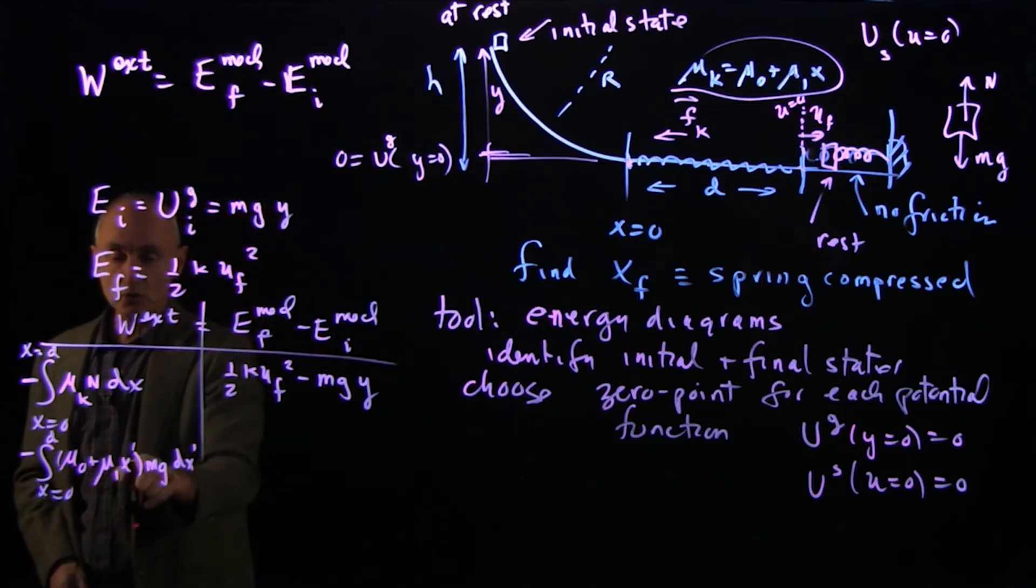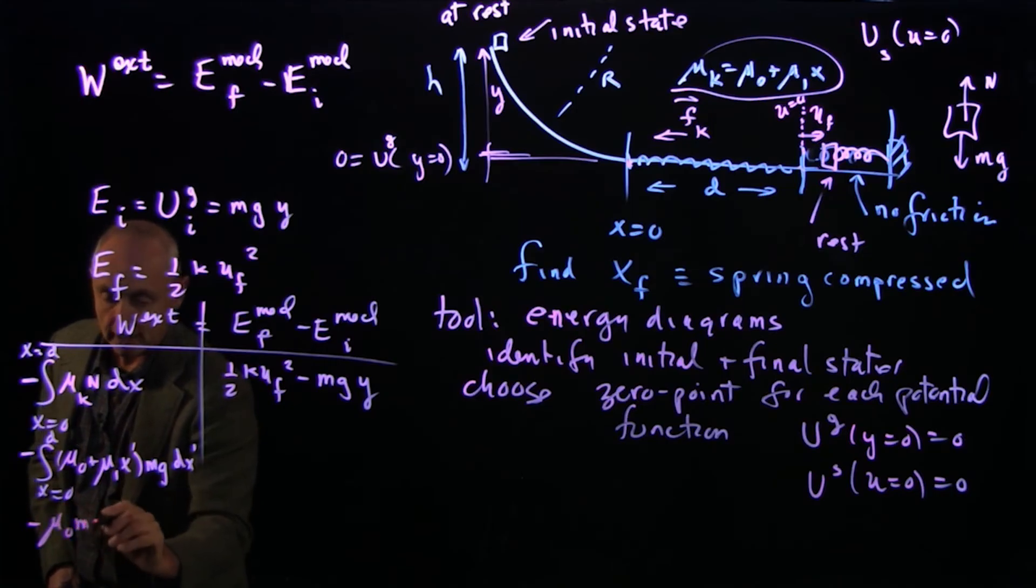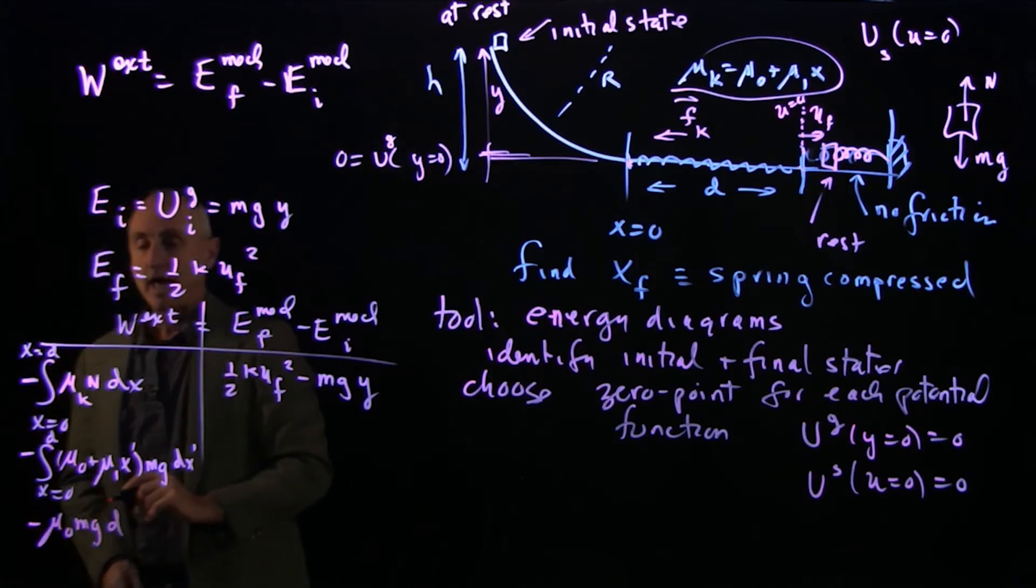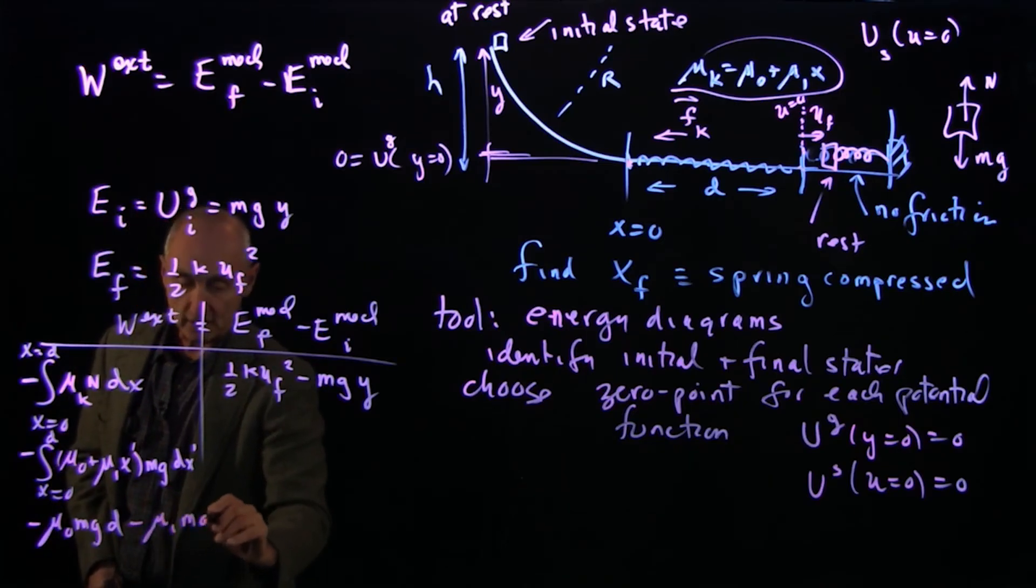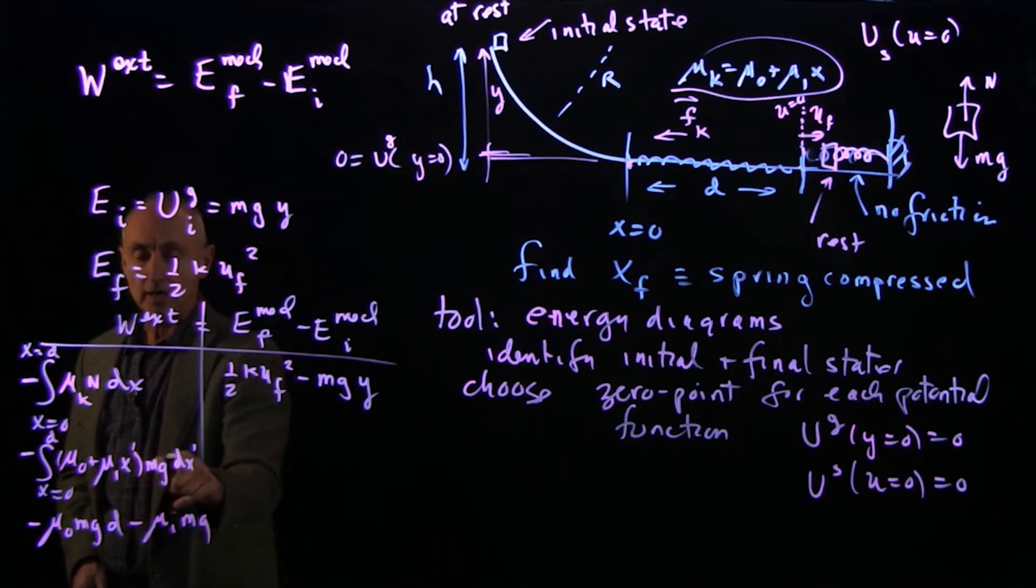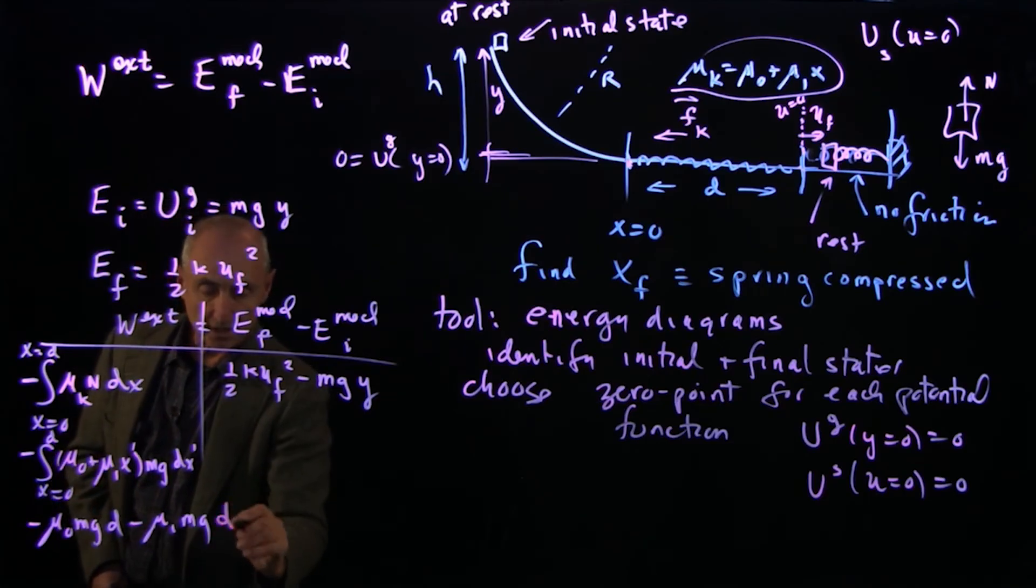And these are just two separate integrals. The first one is easy, it's minus mu 0 mg d. And the second one is minus mu 1 mg. And we're just integrating x prime dx prime between 0 and d. So that's simply d squared over 2.